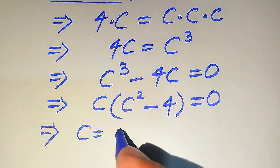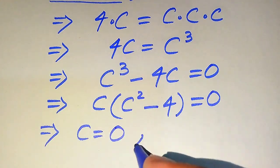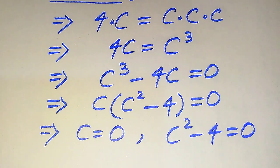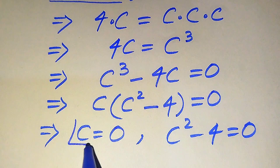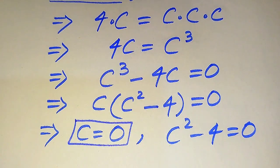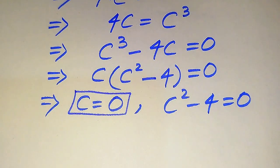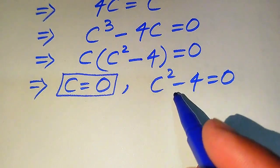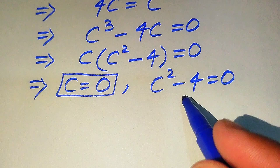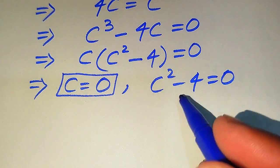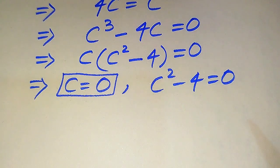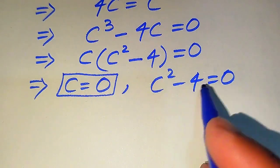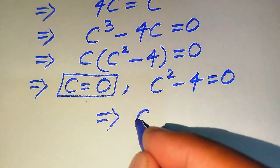We divide this equation into two cases. The first case is c equals zero, and the second case is c squared minus 4 equals zero. So c equals zero is our first root of the given equation. To find the other roots we solve the second case. We have two ways: use the algebraic formula, or apply the square root on both sides.